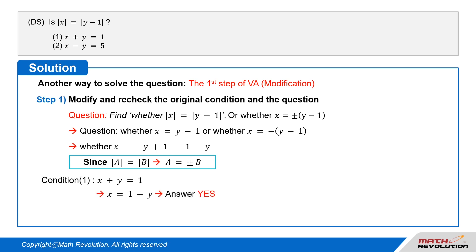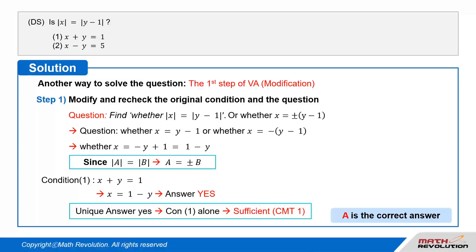Looking at Condition 1, which tells us that x plus y equals 1, that is, x equals 1 minus y. So we get yes as an answer. The answer is unique, so this condition is sufficient by CMT1. Condition 1 alone is sufficient, so A is the correct answer.